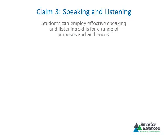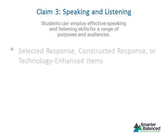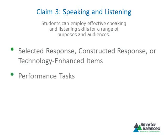Claim 3 focuses on speaking and listening and states that students can employ effective speaking and listening skills for a range of purposes and audiences. Some speaking and listening standards may only be appropriate for local formative and interim assessment purposes. Evidence for Claim 3 will be provided by selected response, constructed response, or technology-enhanced items that focus on understanding and using information presented orally and/or visually, as well as performance tasks that require students to plan and deliver oral presentations. For high school students, Claim 3 speaking performance tasks require students to analyze and evaluate sources, read grade-appropriate texts, and plan and deliver oral presentations.